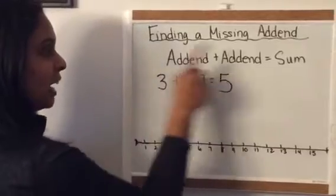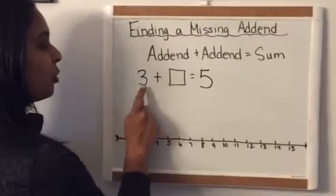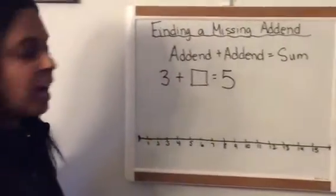So we need to find out in this example what other addend goes with three to make five. So three plus something equals five.